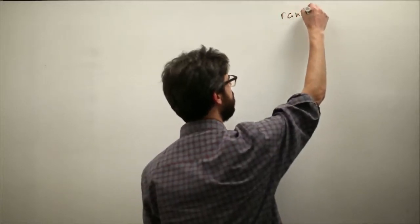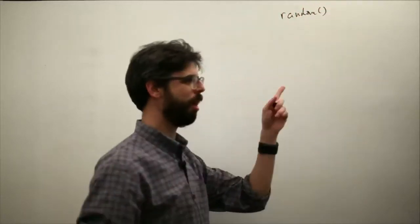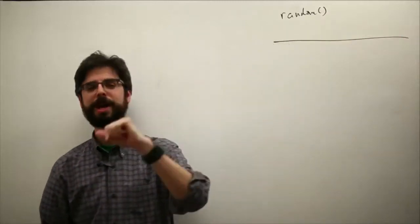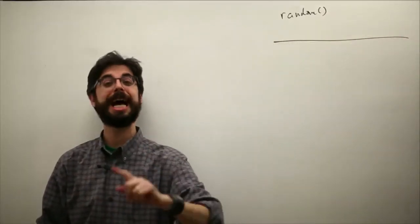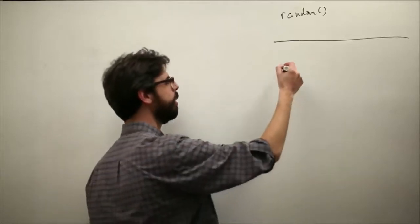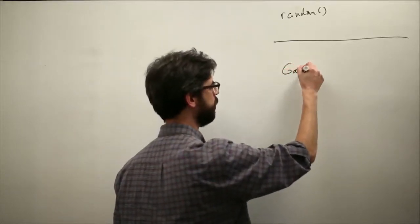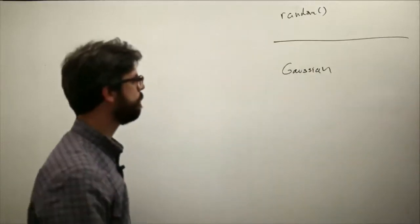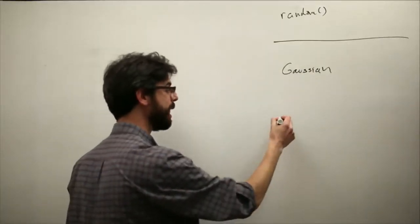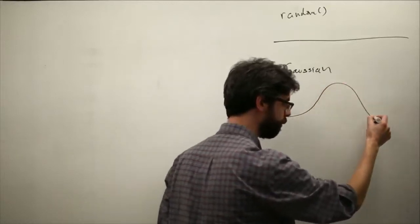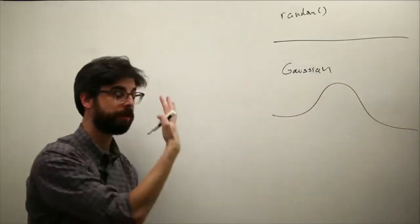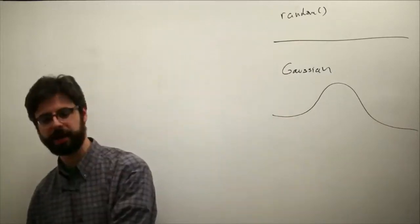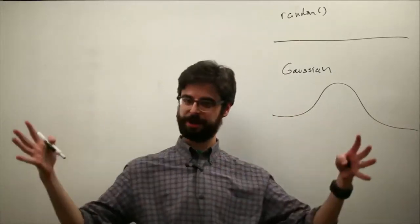We have the random function, which gives us an even distribution of random numbers — every random number has the same chance of being picked as any other. We looked at Gaussian: we used the Random class and the nextGaussian function, and we saw that this gives us a Gaussian or normal distribution, where most results cluster around the mean, with some outliers depending on the standard deviation.